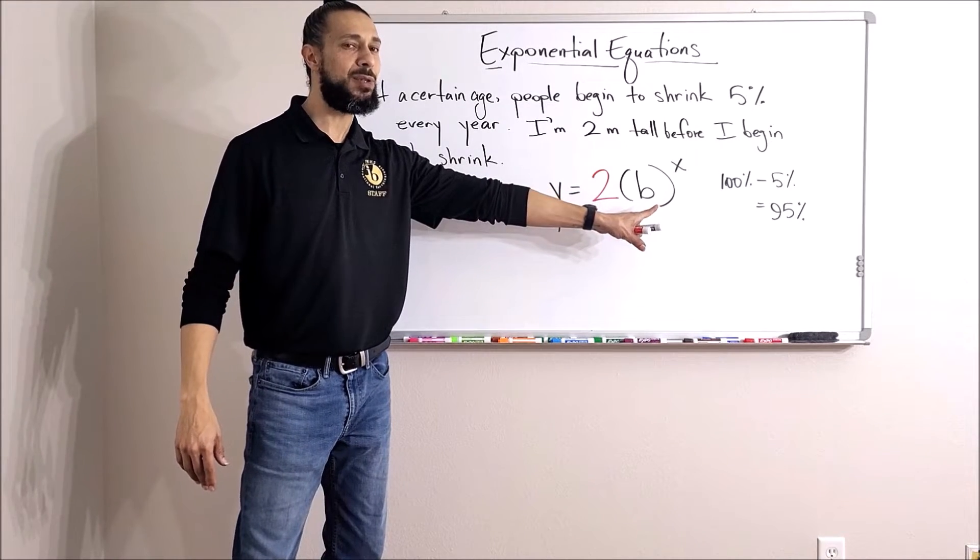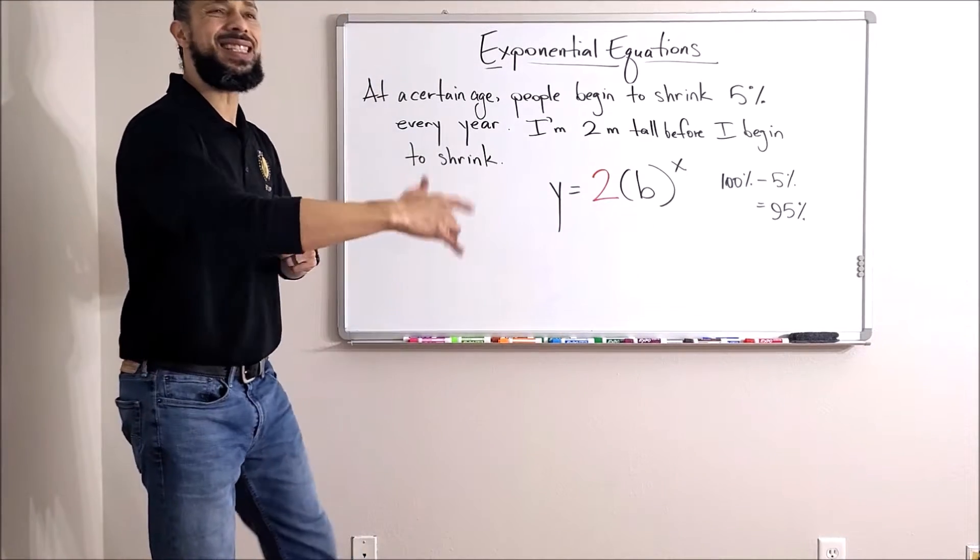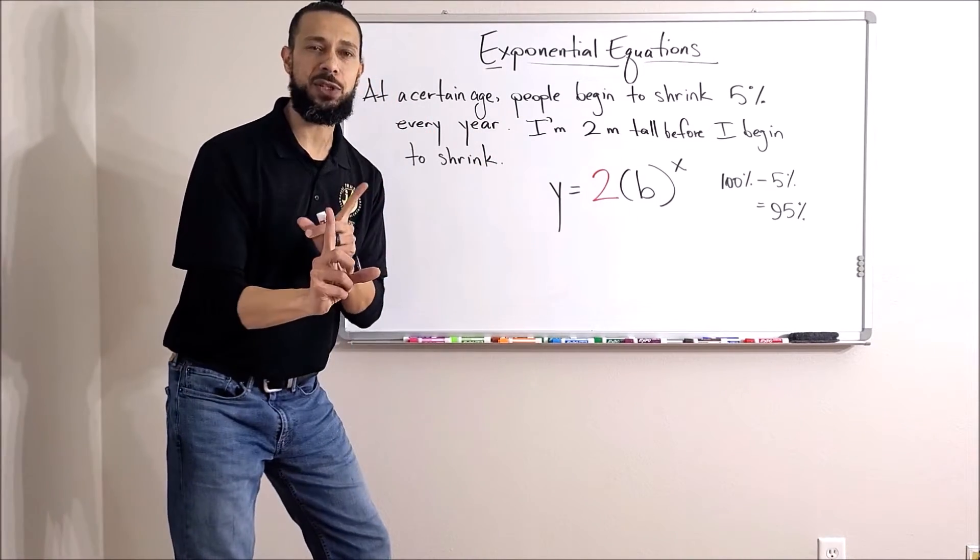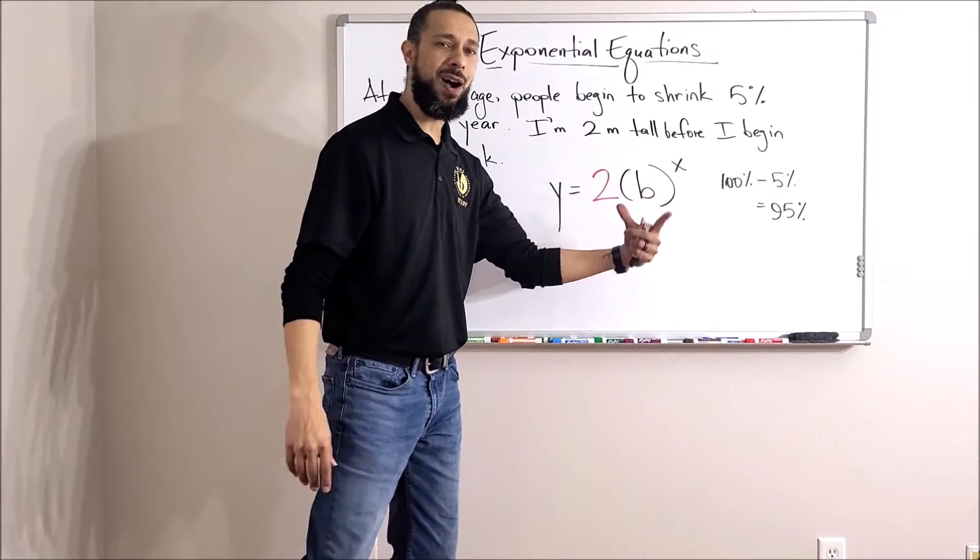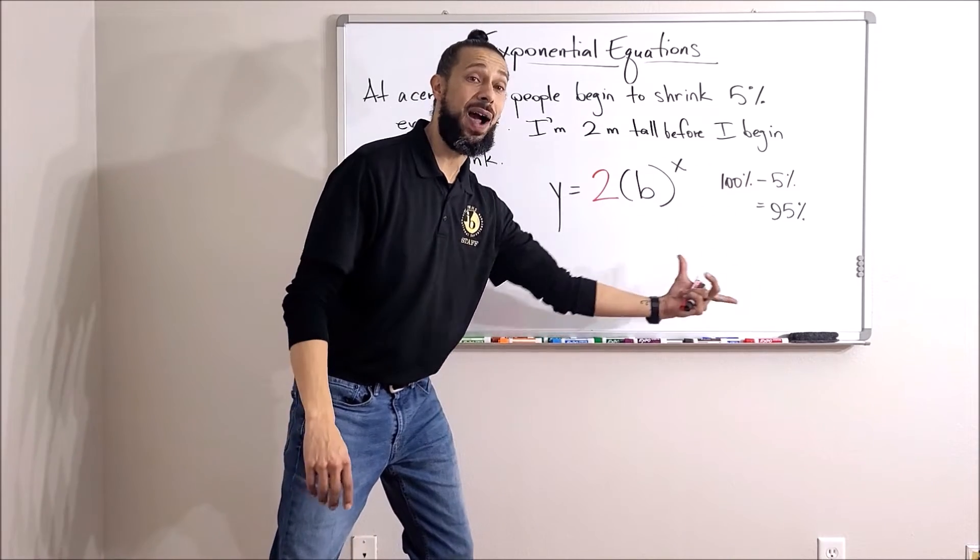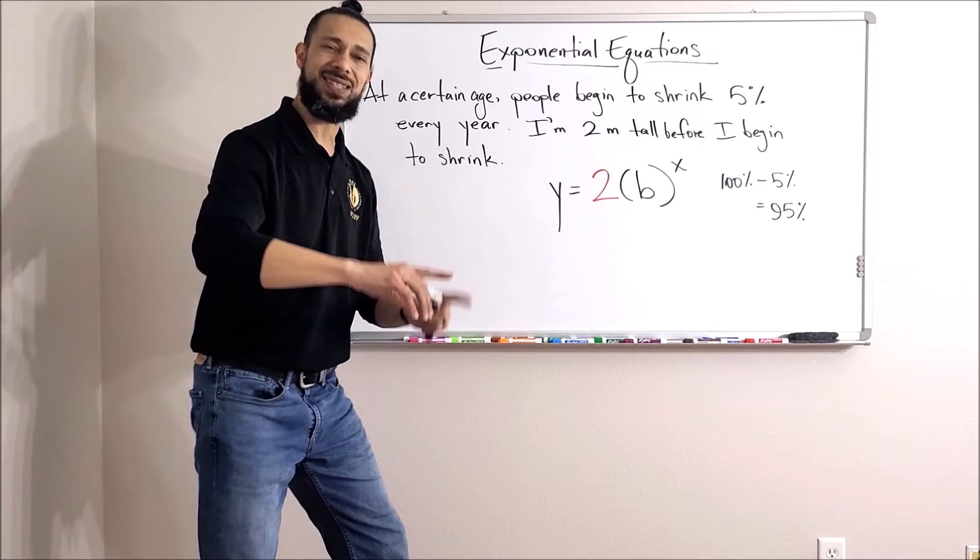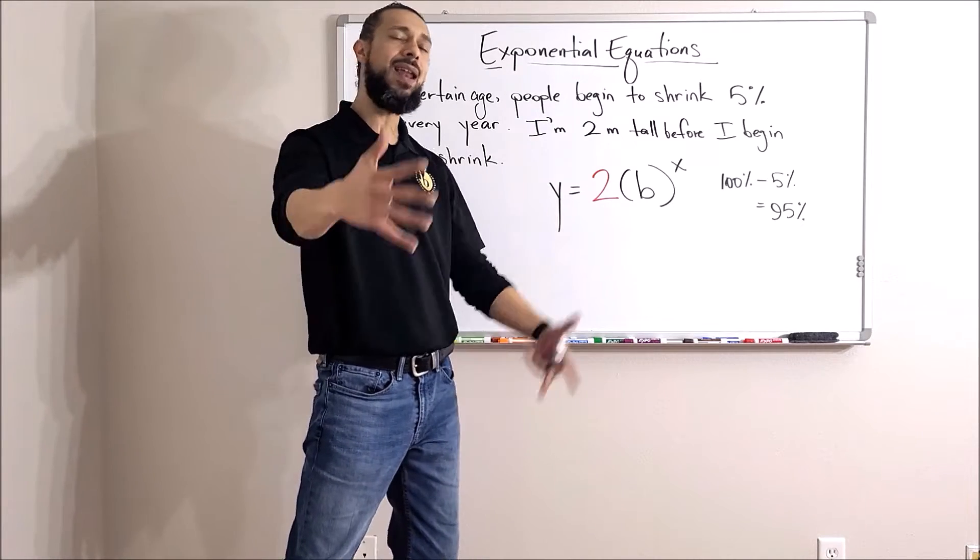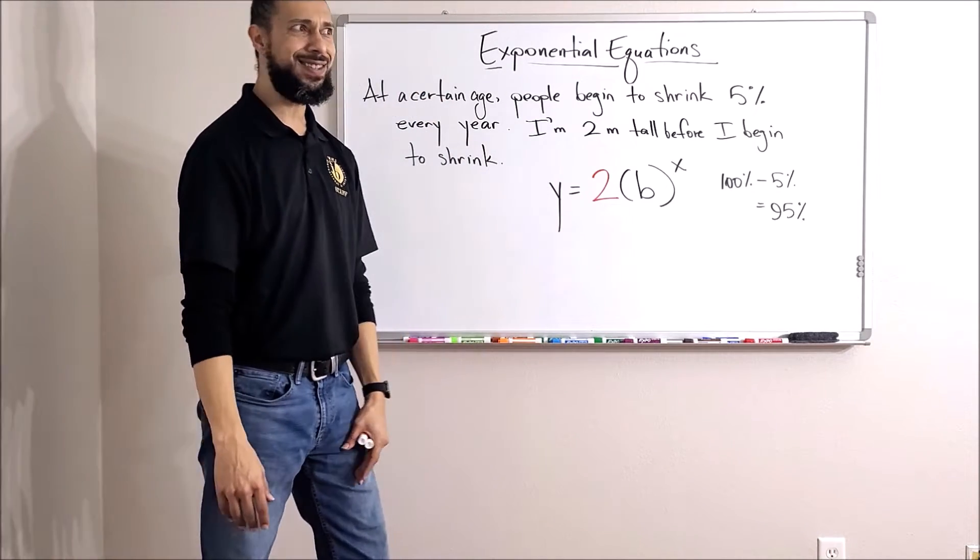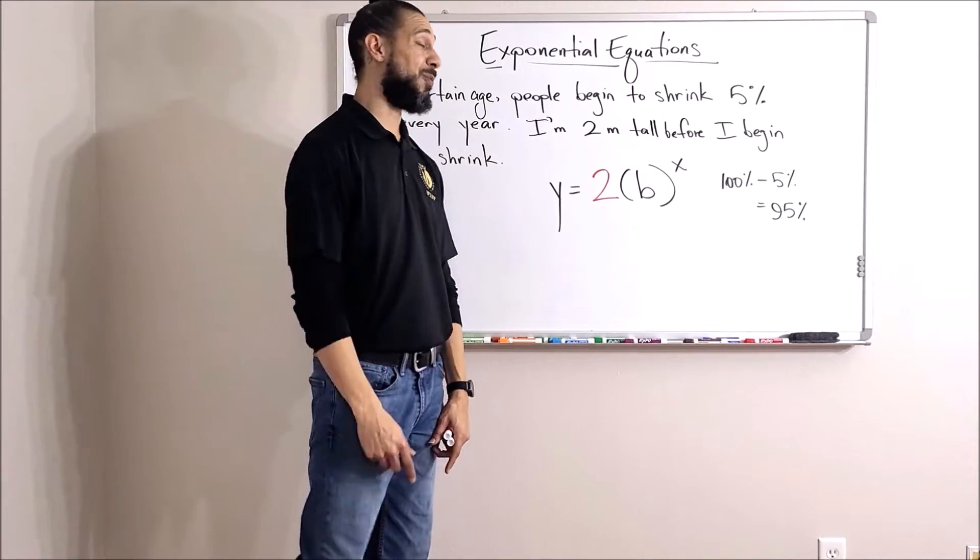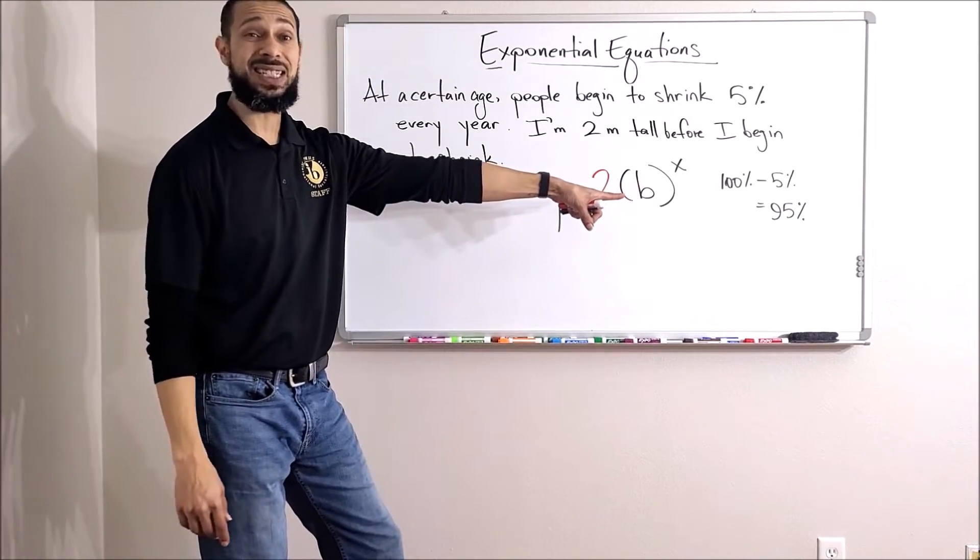But remember, no percentages in here, only decimals. So instead of thinking about five percent and subtracting that from the total, take five percent away from 100. That leaves us with 95, and if I want to take five percent off of something, it's the same as finding 95 percent of something. Yeah, exactly right. Let's save ourselves some work. 95 as a decimal.